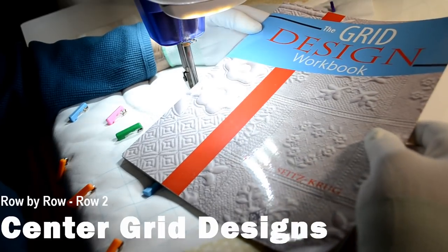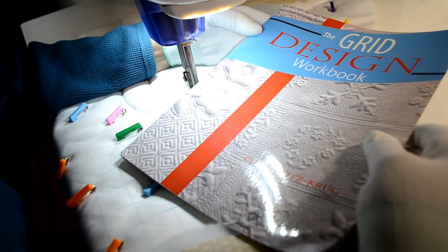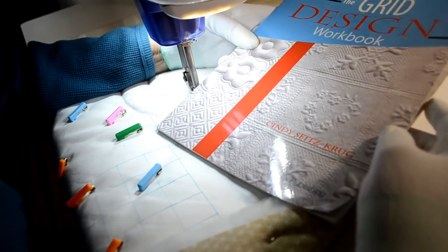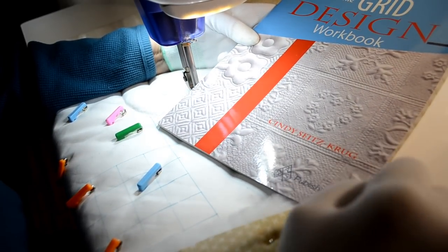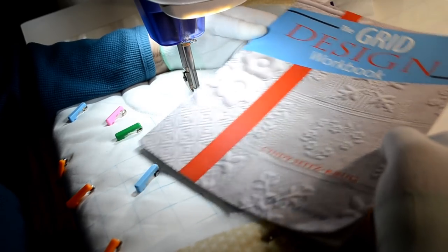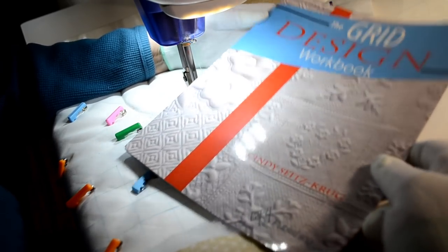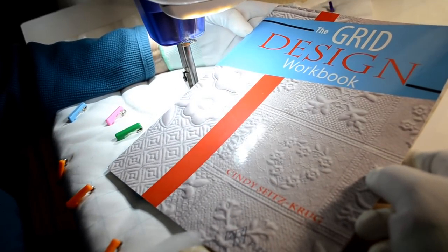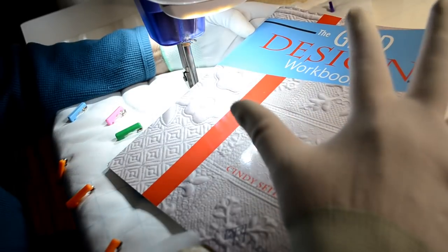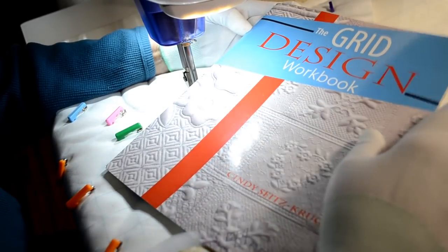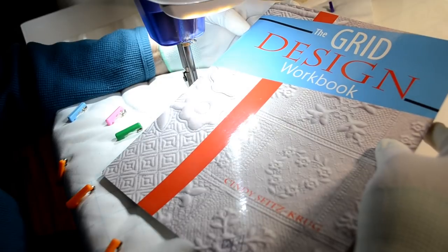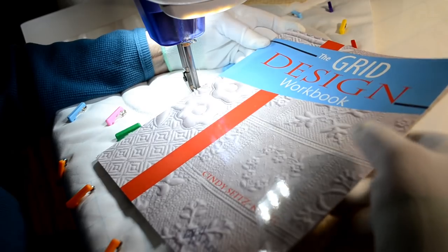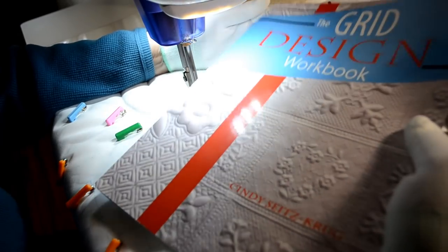The design that I have chosen has been named Scullet Clamshells. And it was introduced to me by Cindy Seitz-Kruck. She's an expert at doing grid designs. And I really recommend, if you like doing grid designs, this is great for background fillers and things like that. She has a book called The Grid Design Workbook, where she shows you how to do all the designs. So this is just another suggestion, another tool in the toolbox.